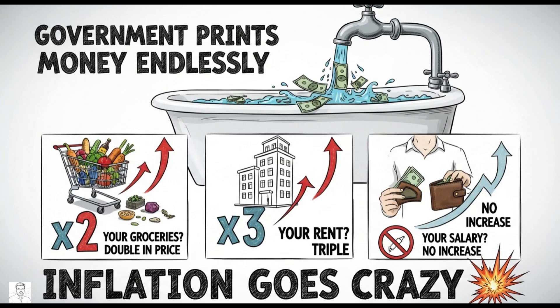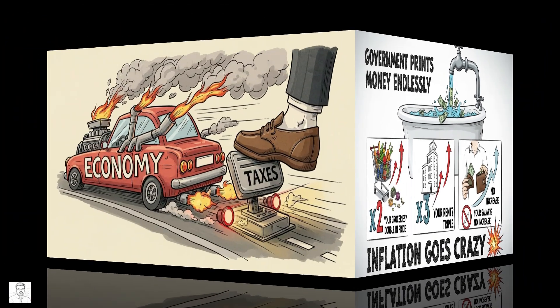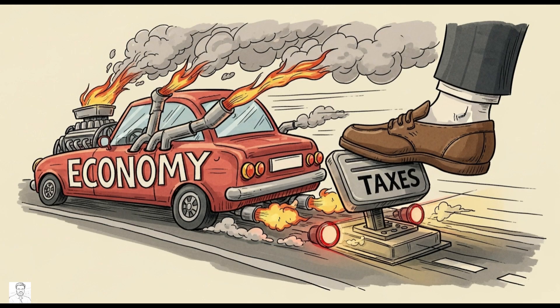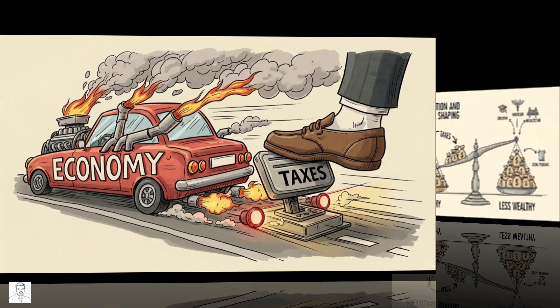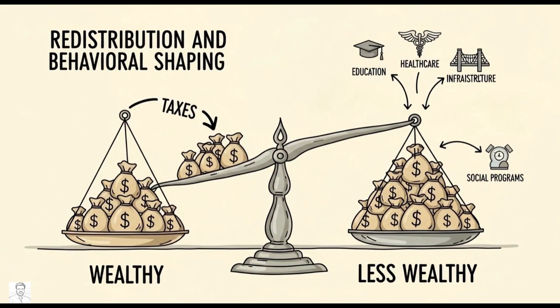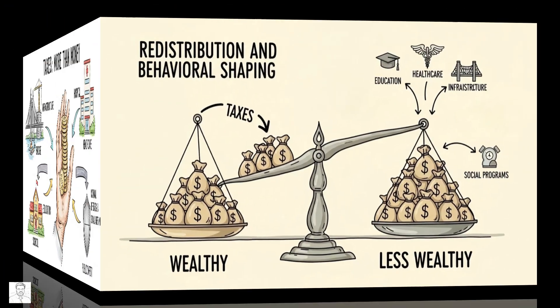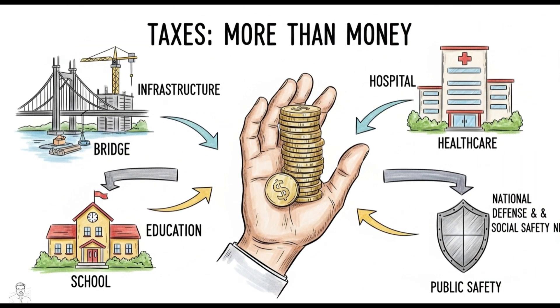If the government printed money endlessly and didn't take anything back from circulation, your groceries would double in price, your rent would triple, your salary — no increase. Inflation goes crazy. So taxes are like a brake pedal: they slow things down when the economy is overheating.